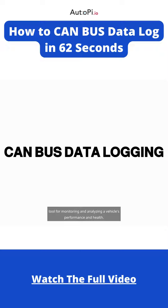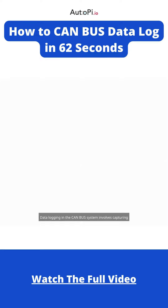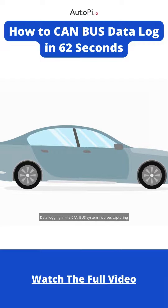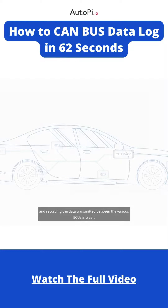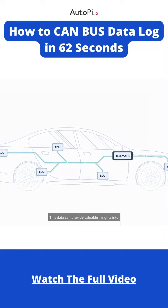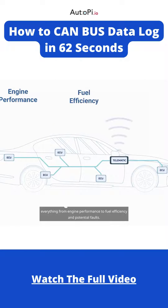Monitoring and analyzing a vehicle's performance and health. Data logging in the CAN bus system involves capturing and recording the data transmitted between the various ECUs in a car. This data can provide valuable insights into everything from engine performance to fuel efficiency and potential faults.